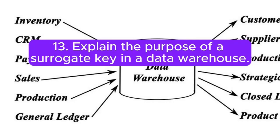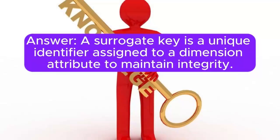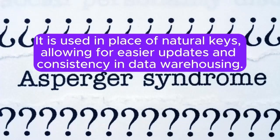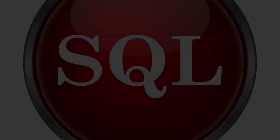Question 13: Explain the purpose of a surrogate key in a data warehouse. Answer: A surrogate key is a unique identifier assigned to a dimension attribute to maintain integrity. It is used in place of natural keys, allowing for easier updates and consistency in data warehousing.